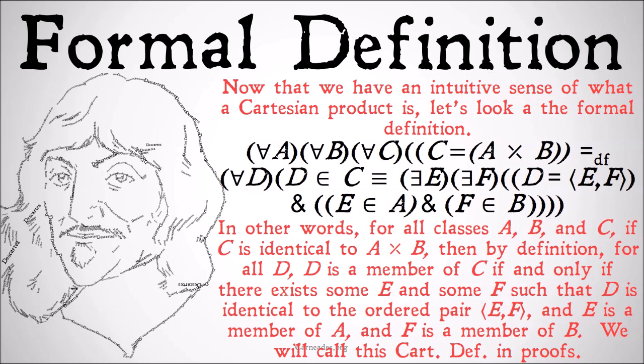In other words, for all classes A, B, and C, if C is identical to the Cartesian product of A and B, then by definition for all D which are members of C, that means that there exists an E and there exists an F such that D is equal to the ordered pair E, F, and E is a member of A and F is a member of B. We're going to call this Cartesian definition in proofs.